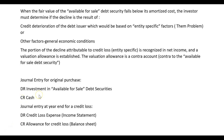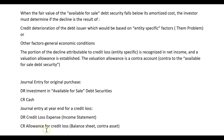It all began with the original purchase of these debt securities. Since they're an asset, there would have been a debit to investment in available-for-sale debt securities and a credit to cash. The exam probably won't ask you for that entry. What you need to know in terms of journal entries is: at year-end, if there's a credit loss, debit credit loss expense on the income statement and credit allowance for credit loss on the balance sheet — that's the contra asset.